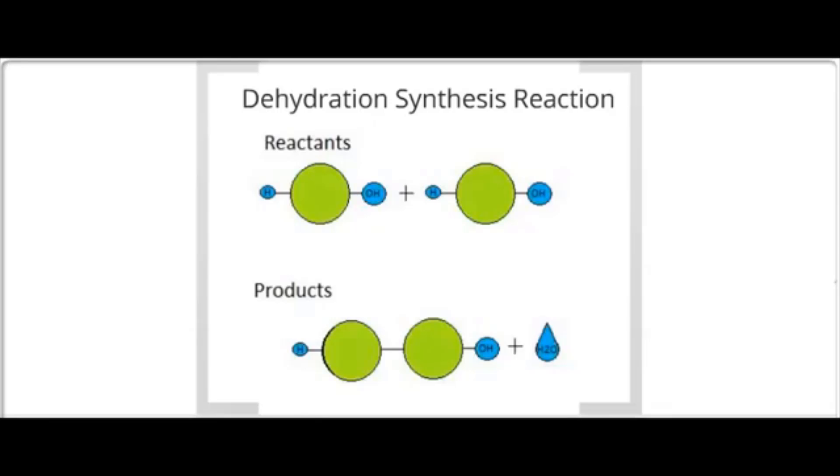The reactants, the substances that were present before the chemical reaction, have the same number of atoms as the products, the substances that are present after the chemical reaction. The only difference is that the atoms are now arranged into new molecules.